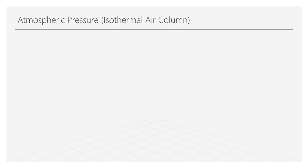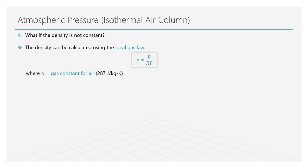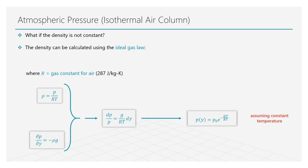But what if the density is not constant? The density can be then calculated using the ideal gas law. Combining this relation with the hydrostatic equilibrium equation and then integrating along the Y direction, gives us this final expression under the assumption of constant temperature. For non-constant density, the pressure varies exponentially with altitude. Now, let's see if this is actually a reasonable assumption.